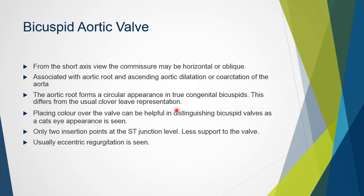Often one leaflet is dominant in size over the other, as there are only two insertion points into the ST junction level instead of three, meaning there is less support to the valve. As a result, there is usually aortic regurgitation, and the jet itself is fairly eccentric.